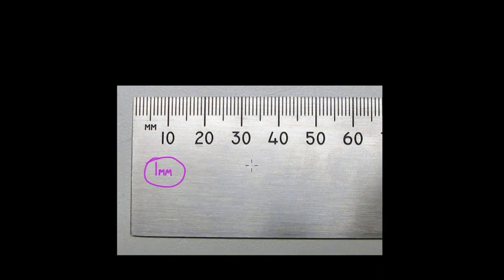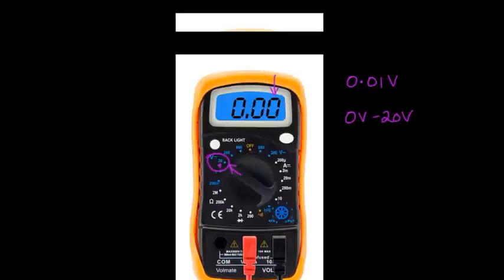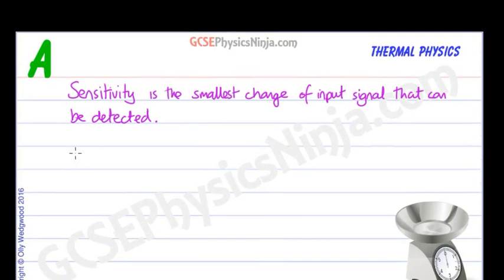A ruler usually goes up to 30 centimeters or 300 millimeters. So the range might be from 0 millimeters to 300 millimeters, and that's all the range means.